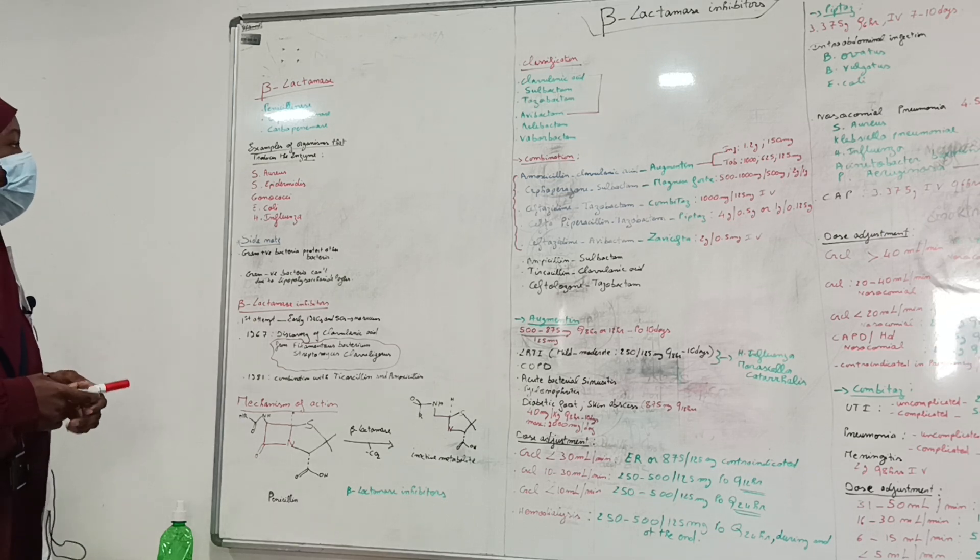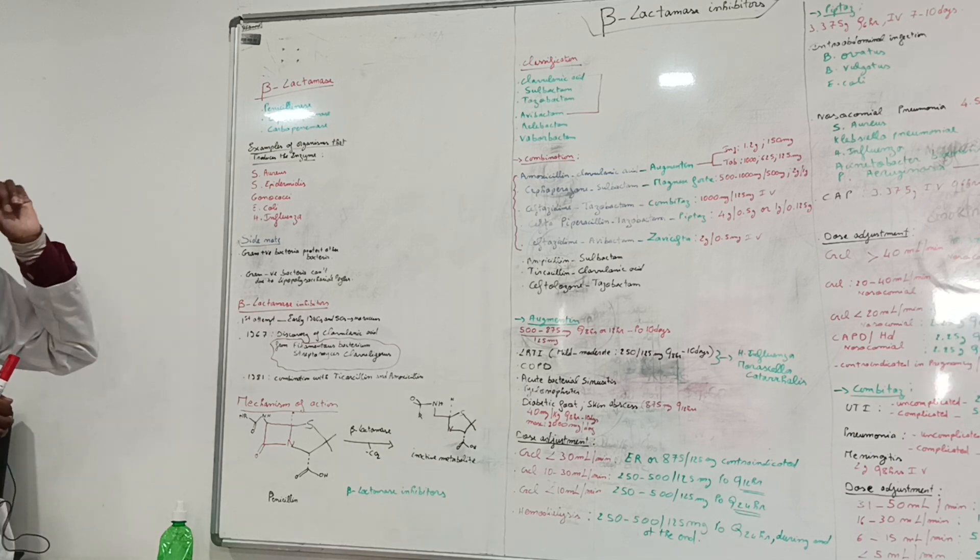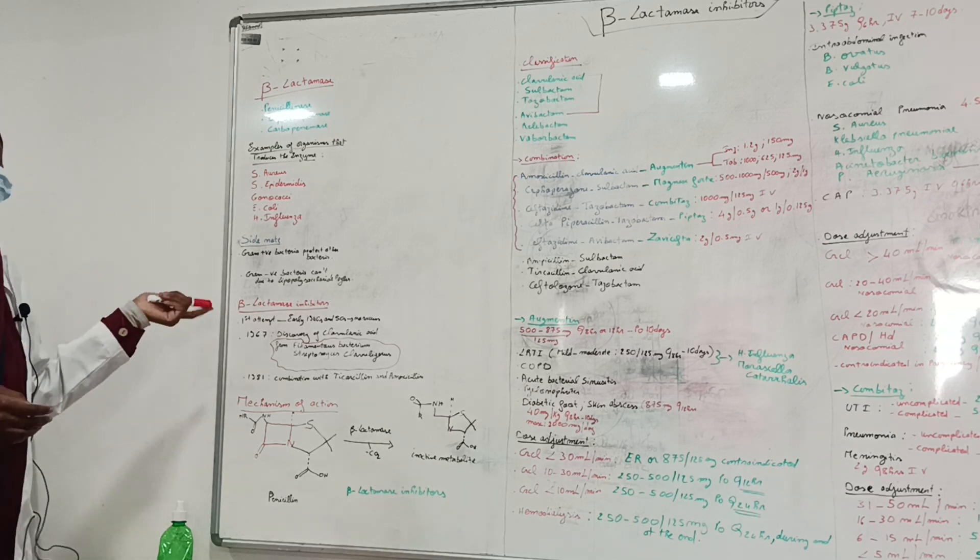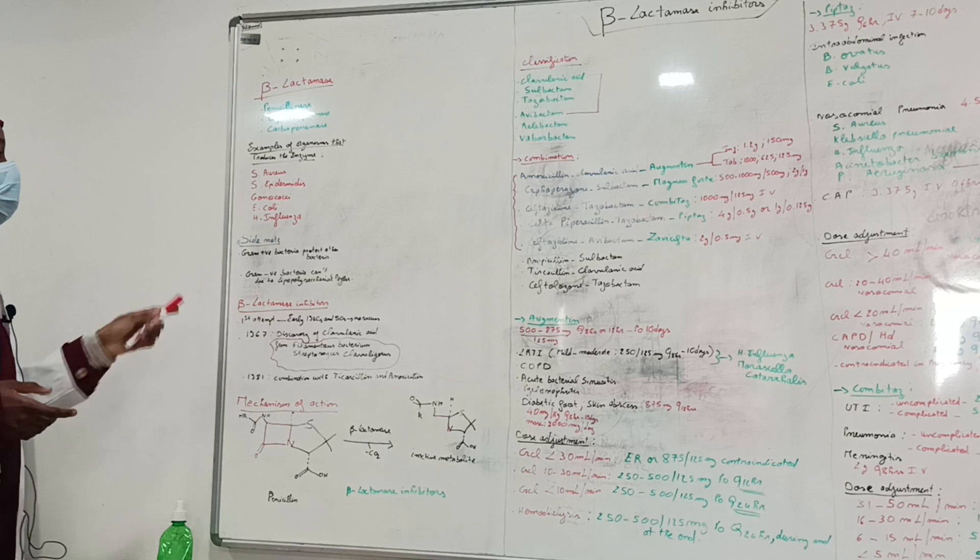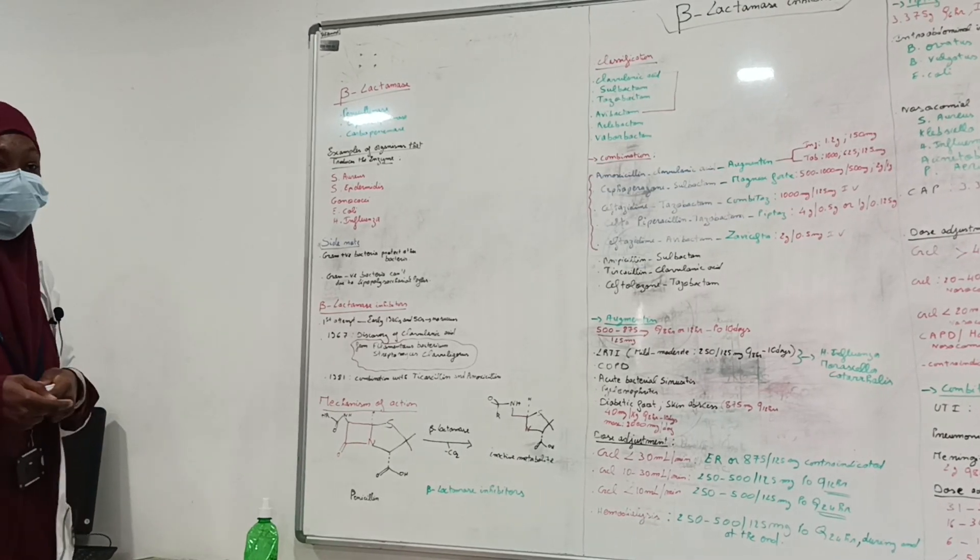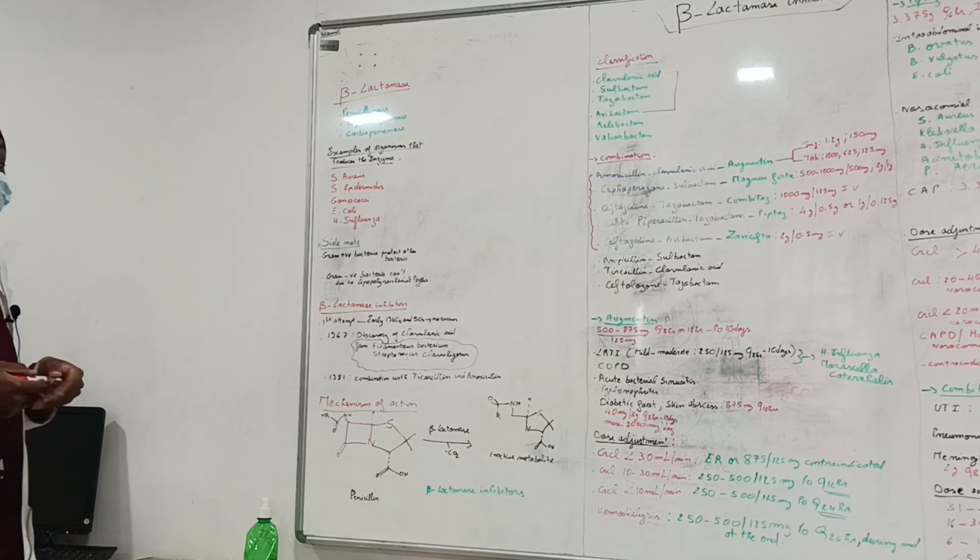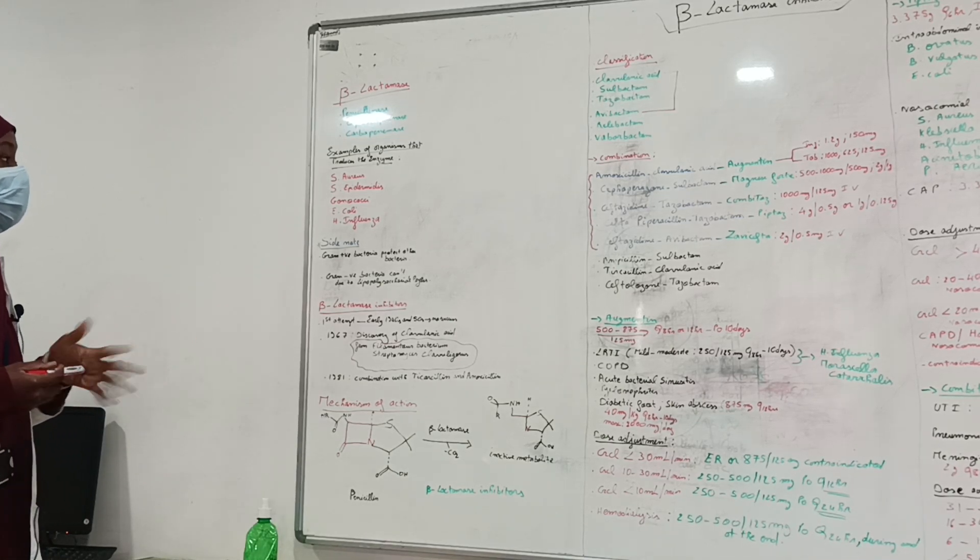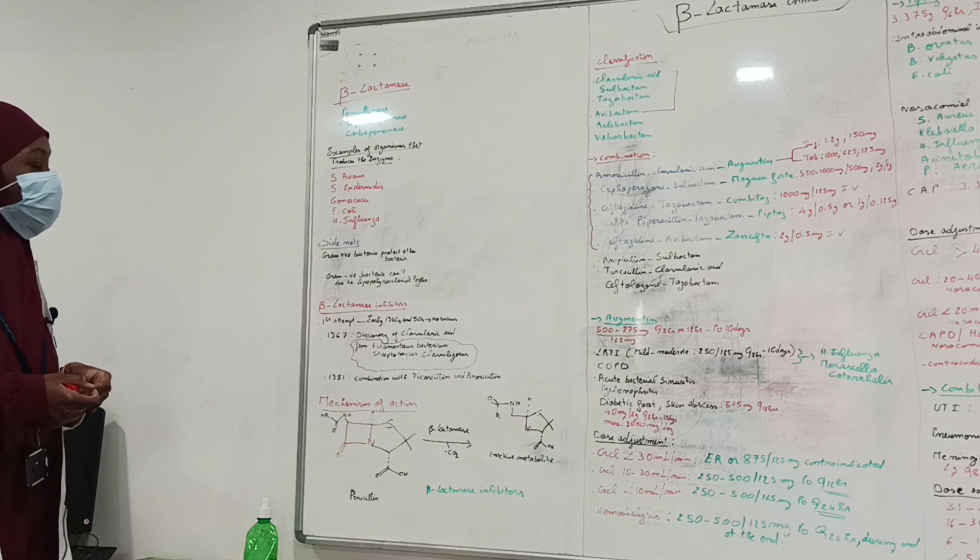Examples of organisms that produce these enzymes are most strains of staphylococci, like Staphylococcus aureus and epidermidis, and some gonococci strains, like Neisseria gonorrhoeae and meningitidis, and also E. coli and H. influenzae.